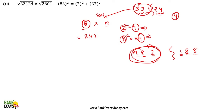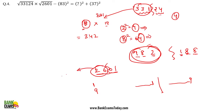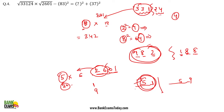Similarly, for √2601: the last two digits are 01, and only 1 and 9 when squared give unit digit 1 or 9 respectively. For the remaining digits, 26 lies between 5² (25) and 6² (36), so we pick 5. Our candidates are 51 or 59. Multiplying 5 × 6 = 30, which is greater than 26, so we choose the smaller option: √2601 = 51.